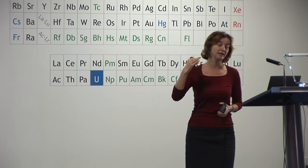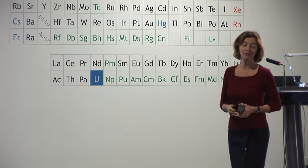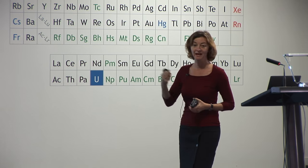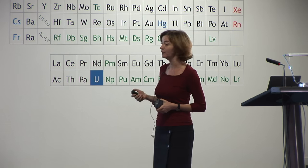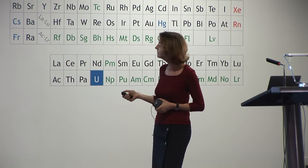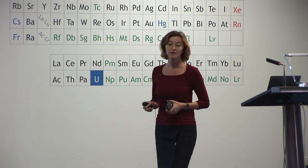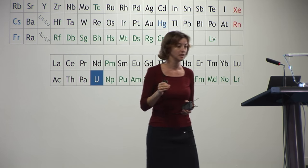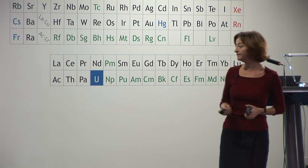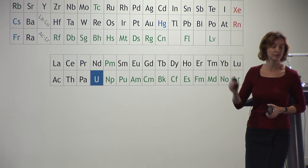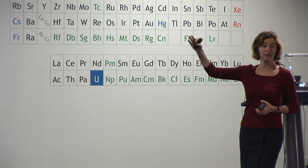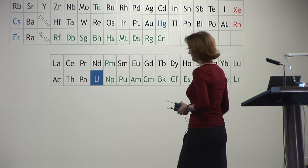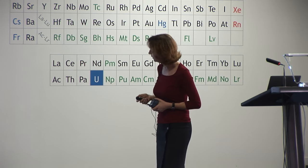Zwicky was in many ways ahead of his time. He was quite famous, and it seems he also had a difficult character. In any case, this result went quite unnoticed for a long time, maybe until the 1970s, when Rubin, Ford, and others studied the rotation curves of galaxies. They saw flat optical rotation curves, which were later studied also in radio, allowing measurements to much higher radii. So this issue got renewed attention.